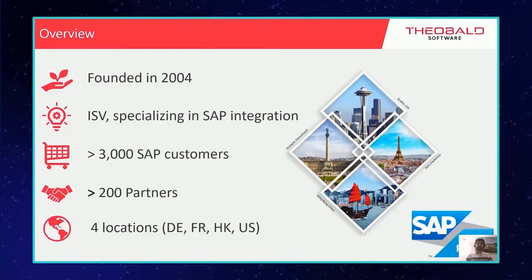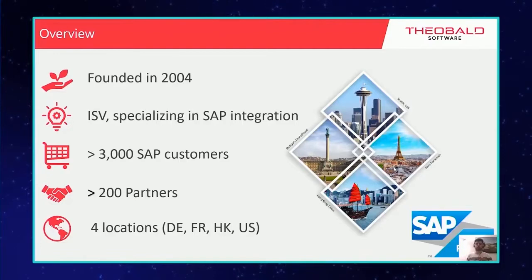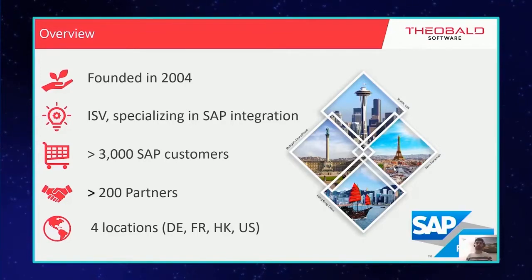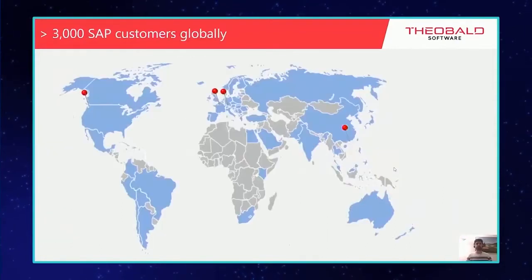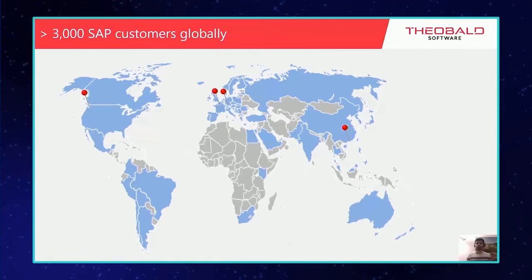On the other side, we have partnerships with consultancy companies who are generally responsible for implementation of projects at the customer side. We have four locations. The headquarter is in Germany, but we have offices in the US in Seattle, in France in Paris, and in Hong Kong and China where we are close to the market and to the customer. Our customers can be found globally in all continents: Europe, America, Asia, Australia, and Africa.